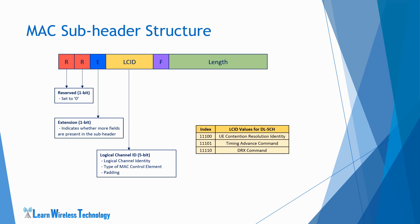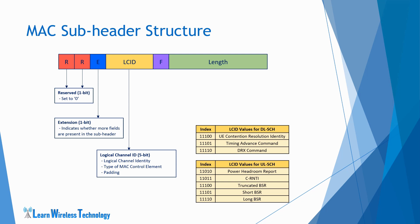This is the list showing LCID values of the corresponding MAC control elements in the downlink. The table shows values of LCID for the downlink shared channel — the control elements sent on this channel are UE contention resolution identity, timing advance command, and DRX command. This table shows the values of LCID for the uplink shared channel — the control elements sent on this channel are power headroom report, CRNTI, and three types of BSR. This list is from the initial LTE release and gets longer for later LTE releases.